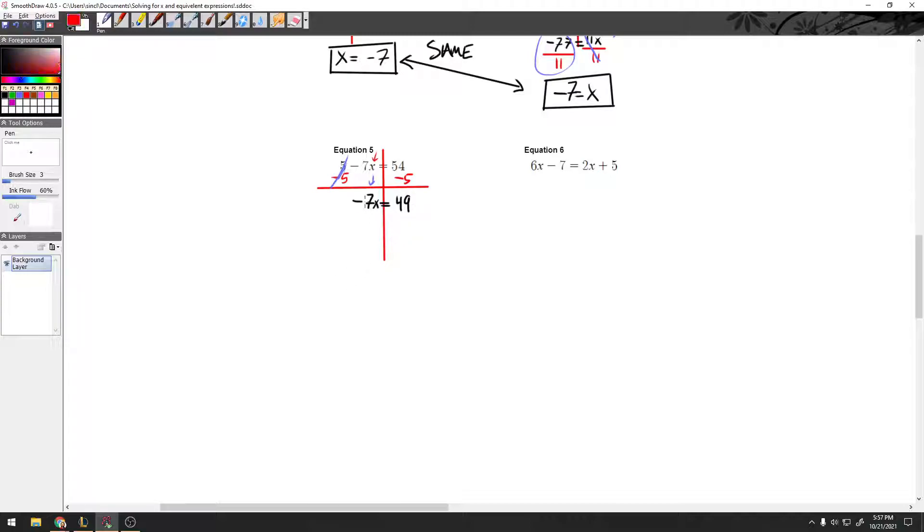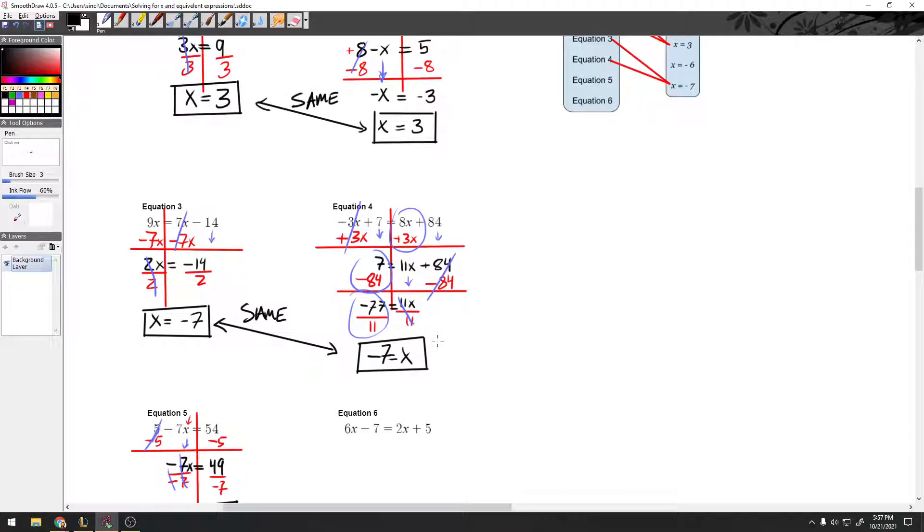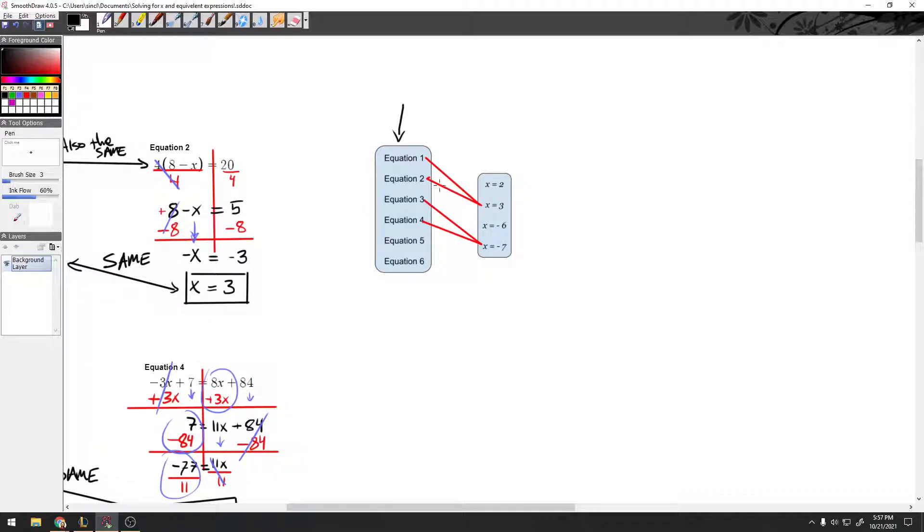Then to get my x alone, I need to divide by negative 7. This side can cross out. And I'll have x equals negative 7. So all these are the same. 3, 4, and 5 are the same. Let's go up here and say this one goes to negative 7.